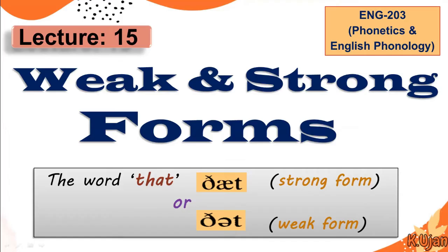This time we are going to talk about weak forms, such as the word 'that.' So in 'that,' we say this is a strong form — 'that' — and this phoneme is used in the strong form. And when we say 'that,' that is a weak form, and this sound or phoneme is used. So 'that' is the strong form and 'that' is the weak form — this is our weak and strong forms example.